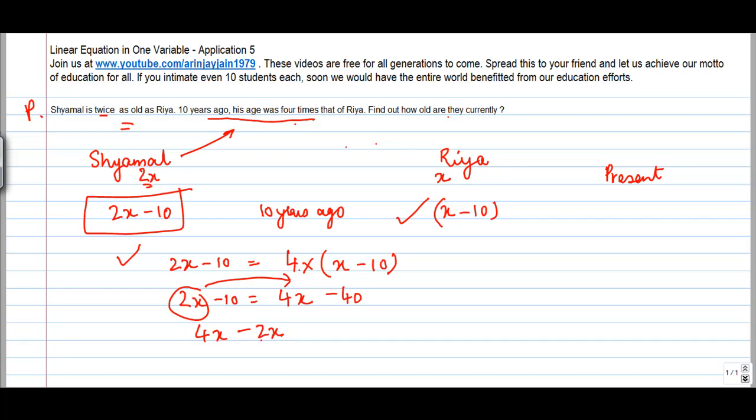So this plus 2X becomes minus 2X is equal to minus 10. So I had minus 10 on this side and I move this minus 40 to the left hand side, so this will change sign.